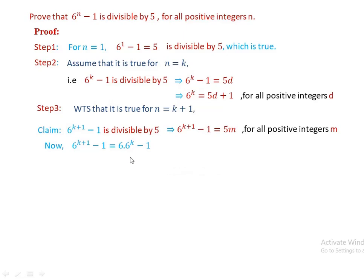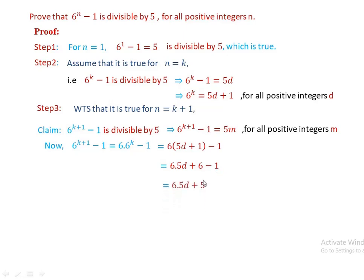We have 6 times (5d plus 1) minus 1, since 6 to the power of k is 5d plus 1. Multiplying by 6 gives 6 times 5d plus 6, and then adding the remaining minus 1 gives 6 times 5d plus 5. Here we have a common factor of 5, so this equals 5 times (6d plus 1), which is 5 times m where m equals 6d plus 1. Since d is a positive integer, 6d plus 1, which is m, is also a positive integer.